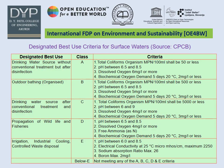The Central Pollution Control Board, Government of India, has classified surface water courses based on best use criteria. They are classified as Class A, B, C, D, and E based on use: drinking water source without conventional treatment but after disinfection, outdoor bathing, drinking water source after conventional treatment and disinfection, propagation of wildlife and fisheries, irrigation, industrial cooling, and controlled waste disposal.